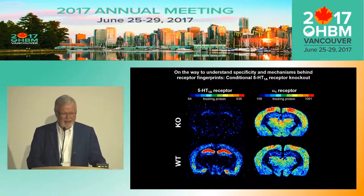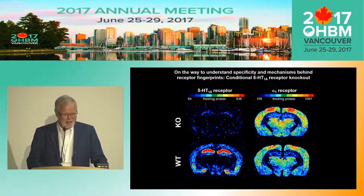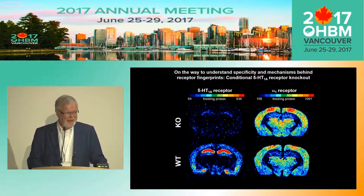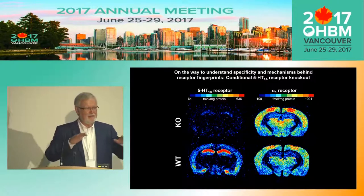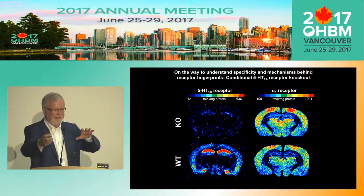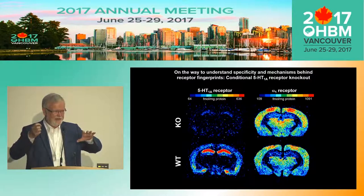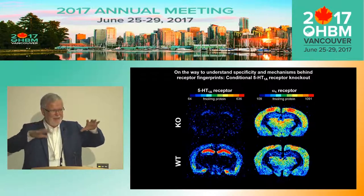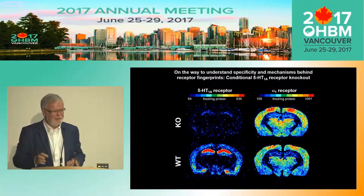The question is whether the receptors we show are specific or non-specific. To test this, together with Wolfgang Wurst from the Helmholtz Center in Munich, we created conditional knockouts of single receptors. These conditional knockouts help us study the mechanism of receptor tuning. If we take away one receptor in the adult cortex after normal development — a conditional knockout — we can see how all other receptors balance this removal.